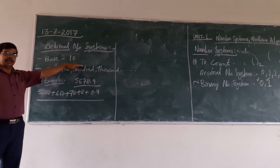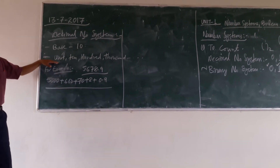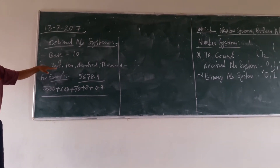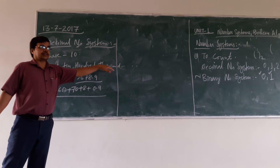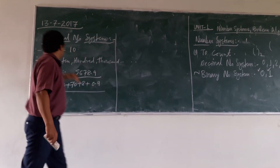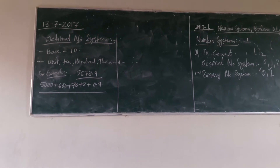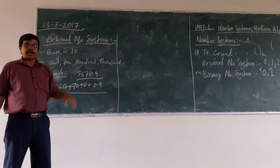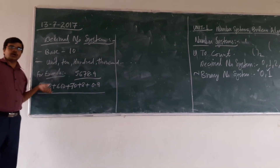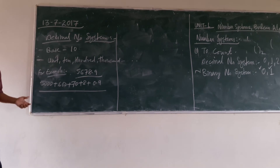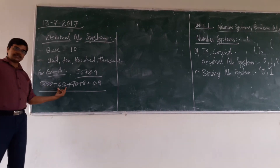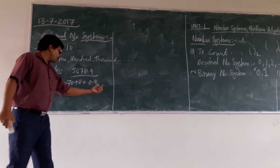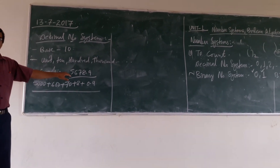In decimal, the base is 10, and any number can be represented in terms of units of 10, 100, 1000, and so on. Let us assume we are having one number, say 5678.9. This number is composed of 5000 plus 600 plus 70 plus 8 plus 0.9. If you add them, you will get this number.